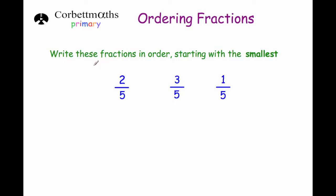The question says: write these fractions in order starting with the smallest. So we've got 2 fifths, 3 fifths and 1 fifth. To put those in order we just need to think what's the smallest fraction and what's the largest one. Clearly 1 fifth would be the smallest, then 2 fifths, and then 3 fifths would be the largest. That was quite an easy question.